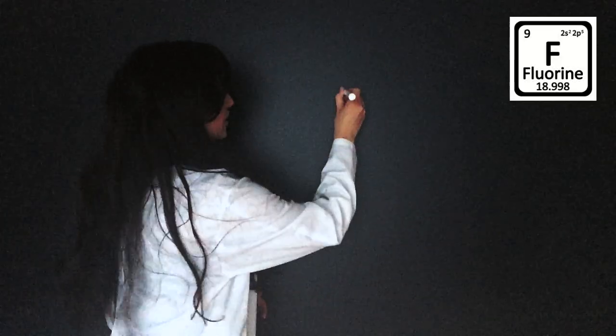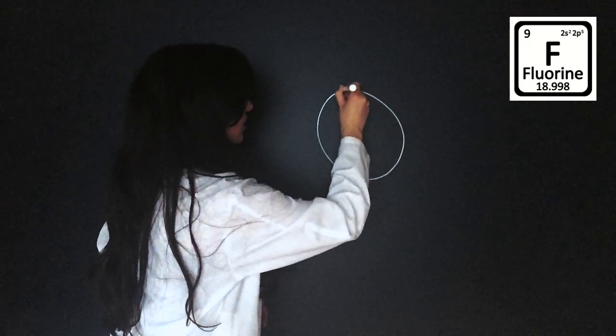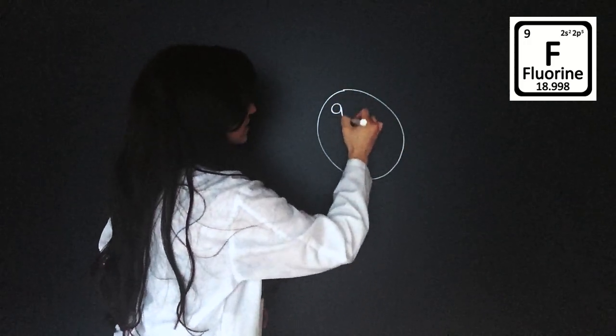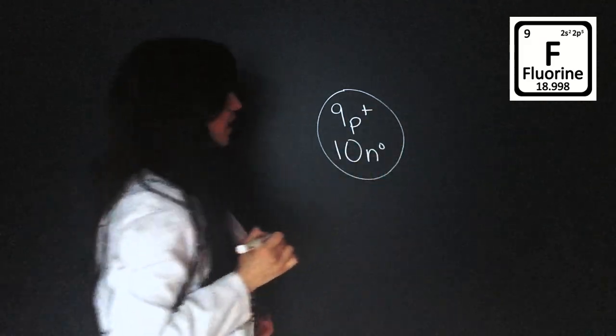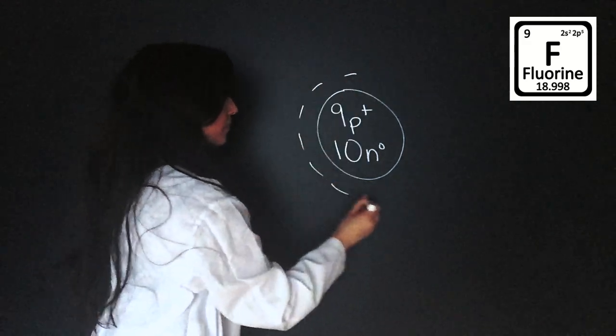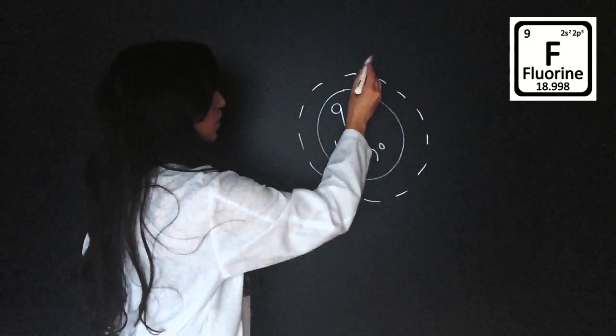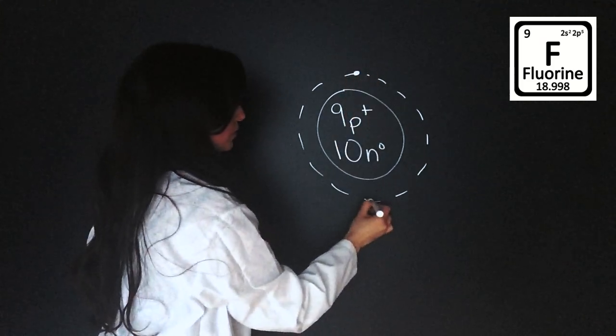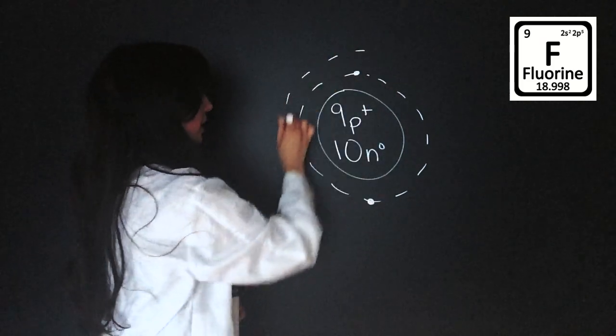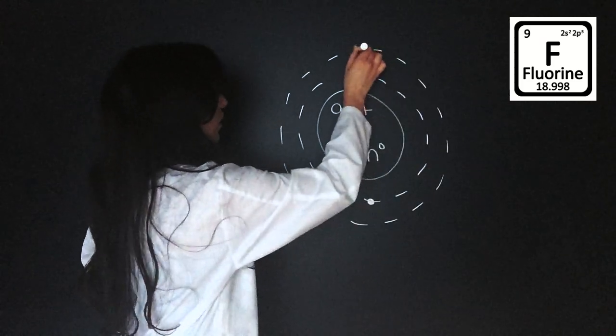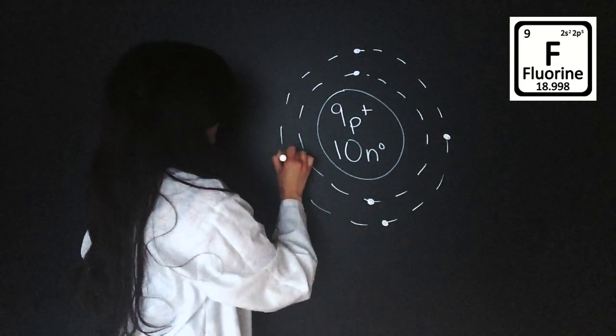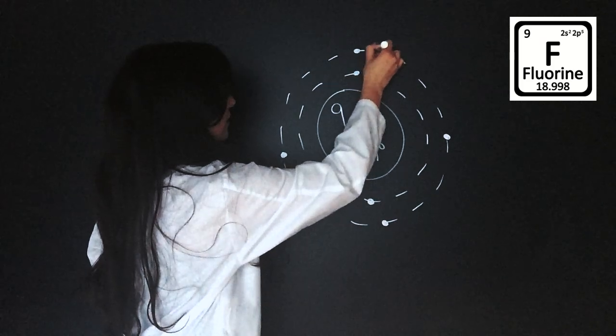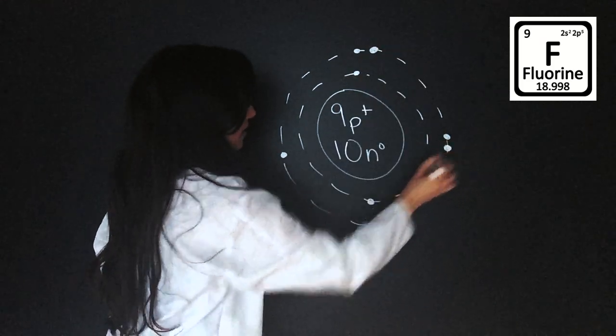Let's try another atom. This time we'll try fluorine. Draw the nucleus. Fluorine has nine protons and ten neutrons. We then draw the orbit. One, two, next orbit, three, four, five, six, seven, eight, nine.